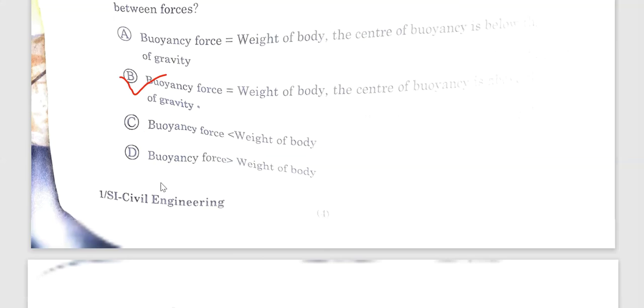Question number 9. In stable equilibrium of completely submerged bodies, what is the relation between forces? The buoyancy is nothing but weight of the body and the center of buoyancy always lies above the center of gravity. Center of buoyancy is above the center of gravity. Option B is correct. The center of buoyancy is above the gravity and the weight of the body.